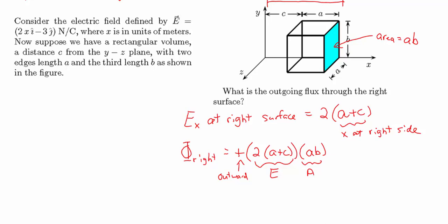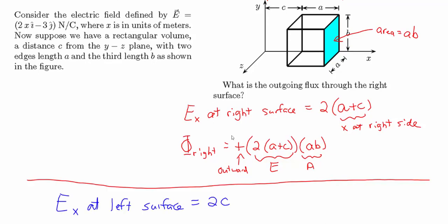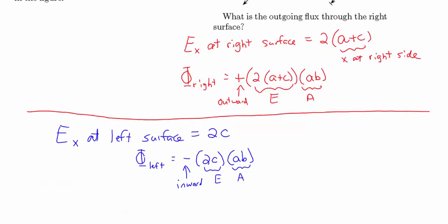The flux through the left surface is similar. At the left surface x = c, so E_x = 2c. The electric field is pointing to the right, which means it is pointing into the rectangular volume at the left face, so the flux is negative: −2c · ab. The area of the left side is also a × b, the same as the right side.